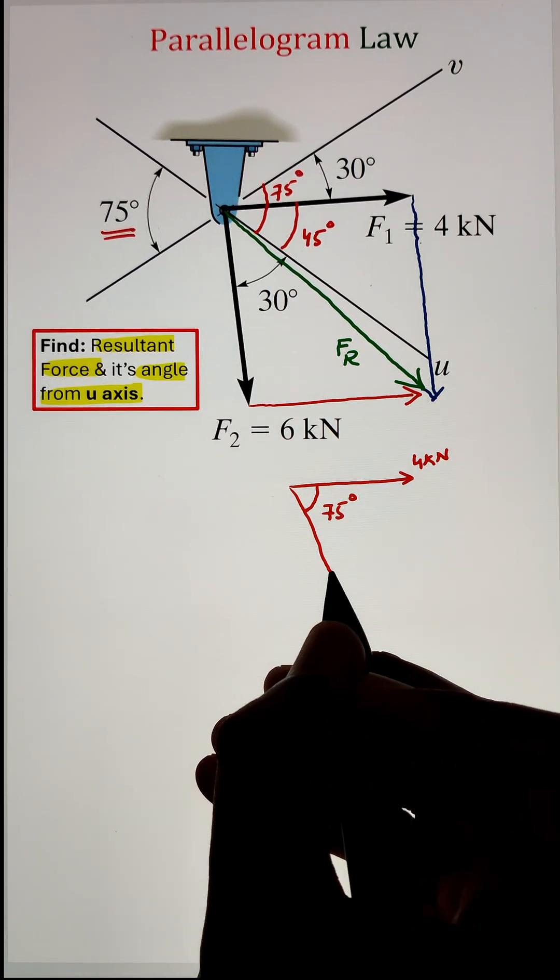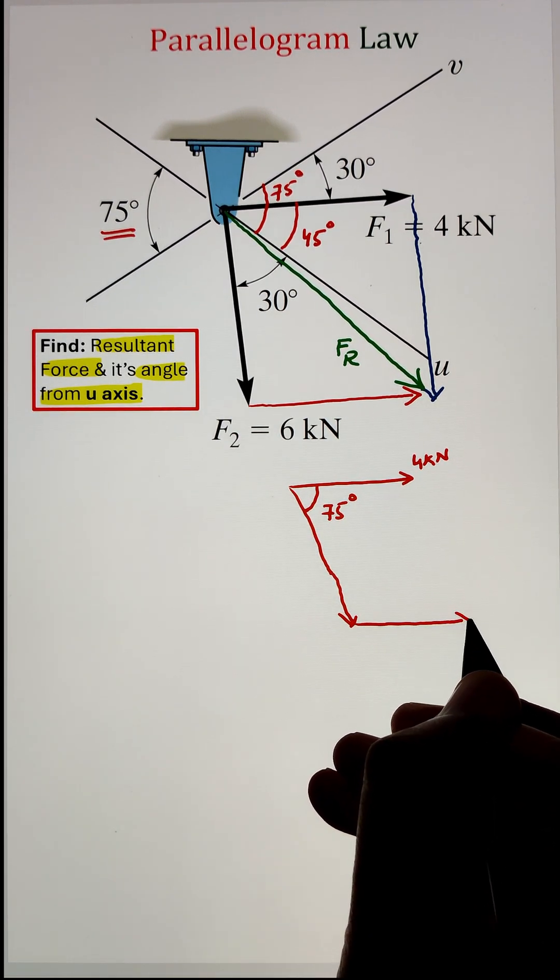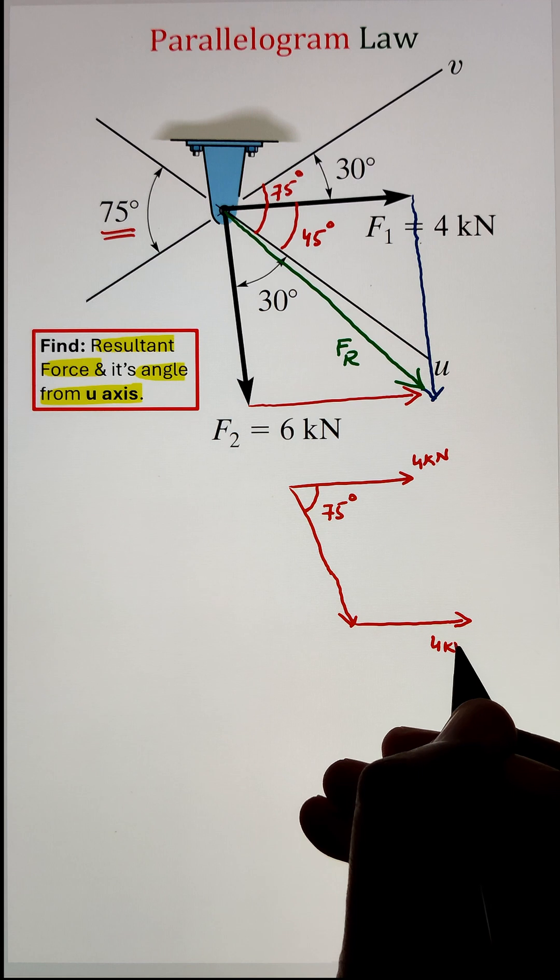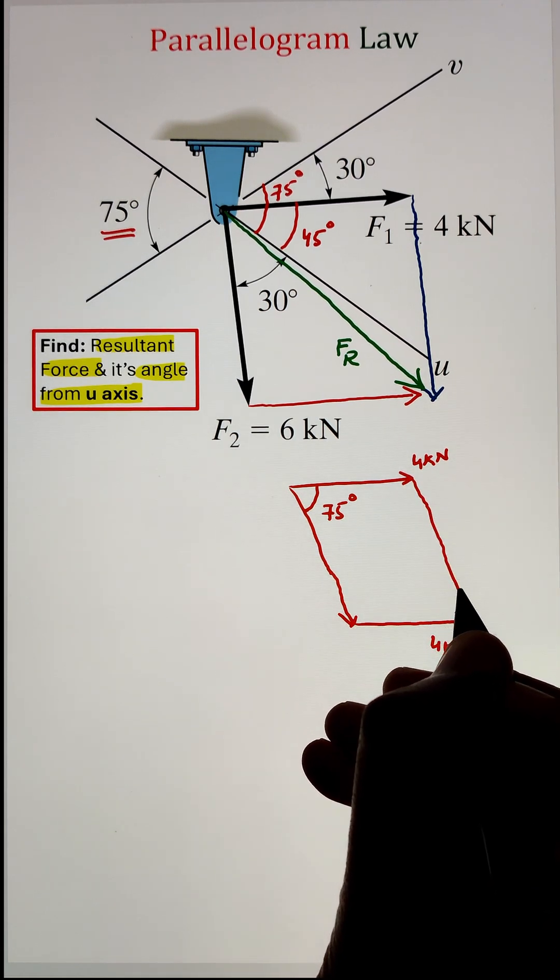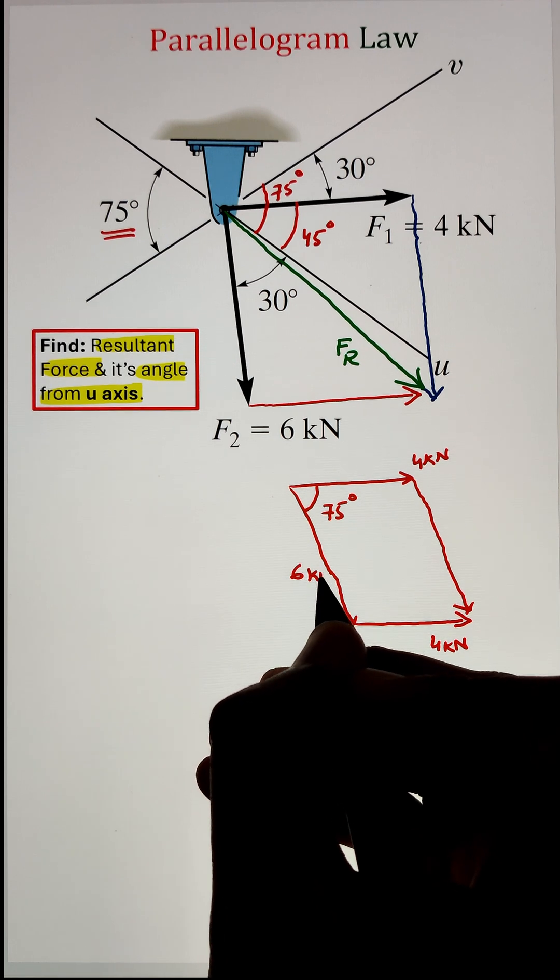Now, by property of the parallelogram, opposite angles are equal to one another. Also the sum of internal angles of a parallelogram is 360. Based on that, we can identify the other two angles that is coming as 105 degrees.